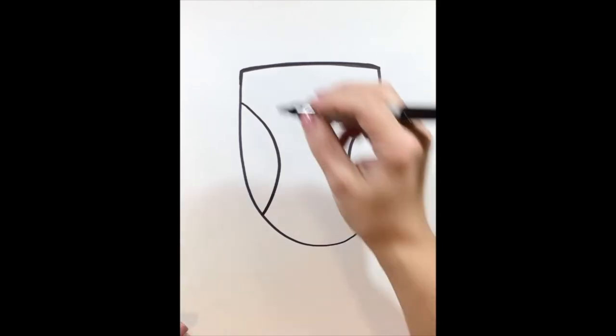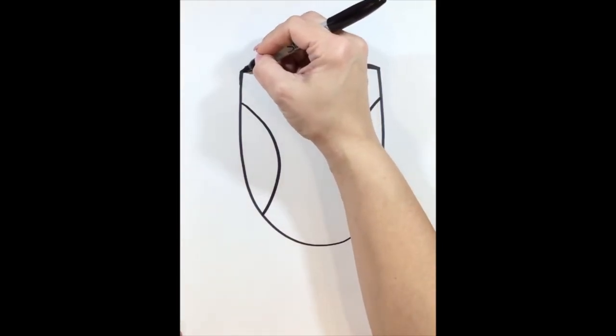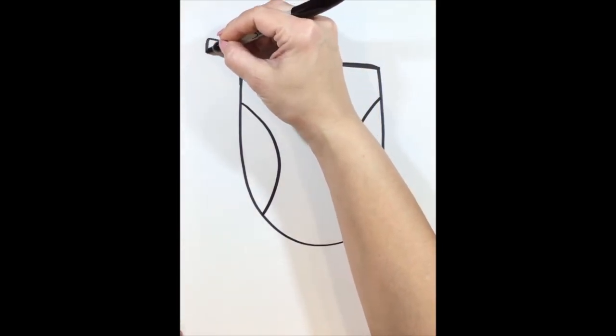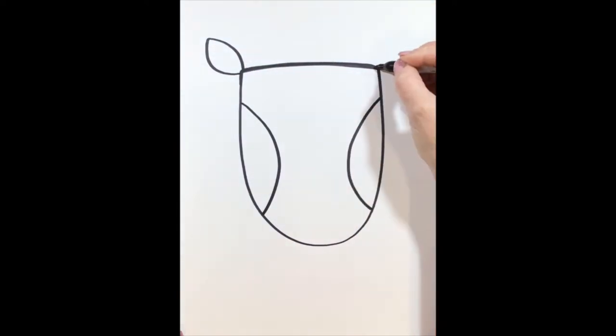Next, we're going to add the ears to our owl, and it's going to be two curved lines. One curved line and a curved line underneath to create the ear. Put one on both sides.